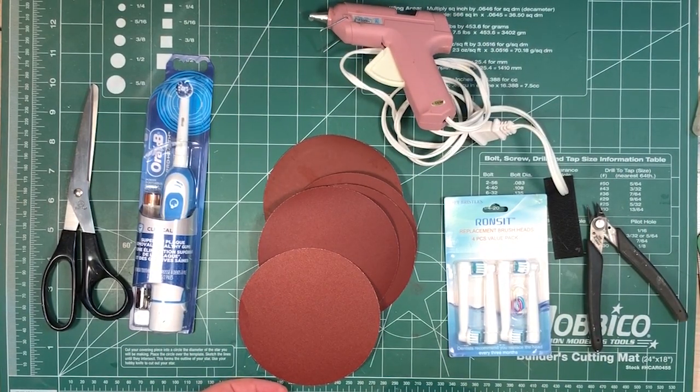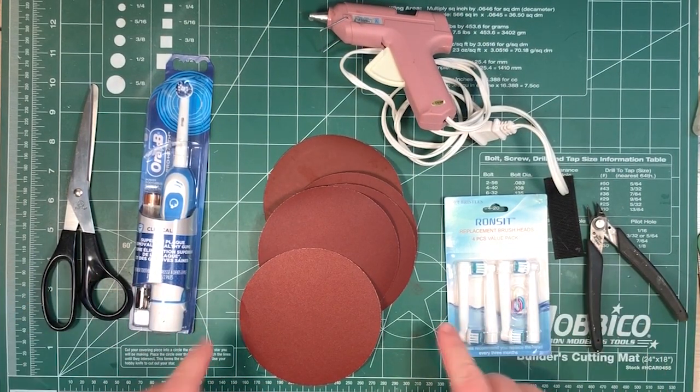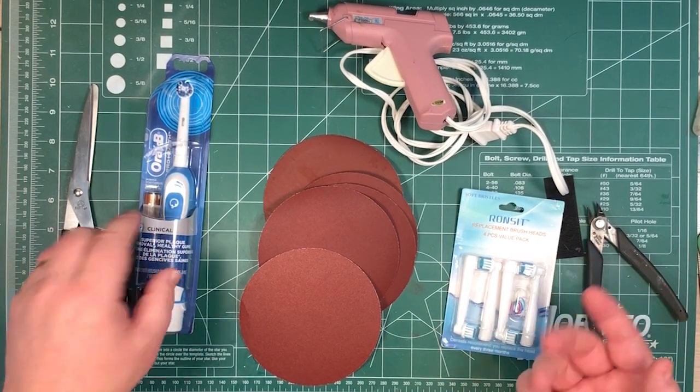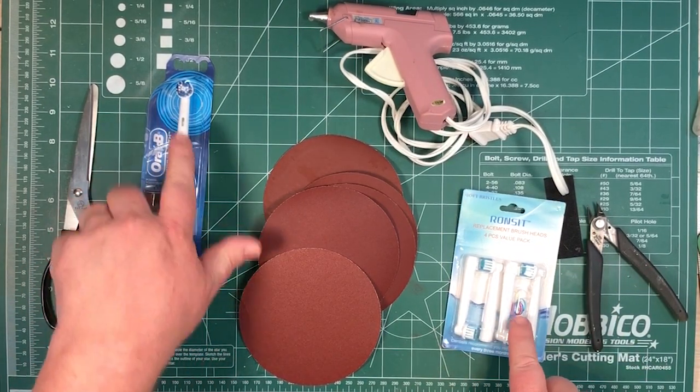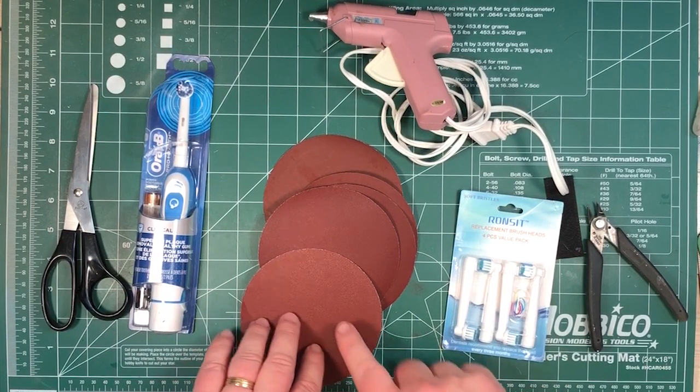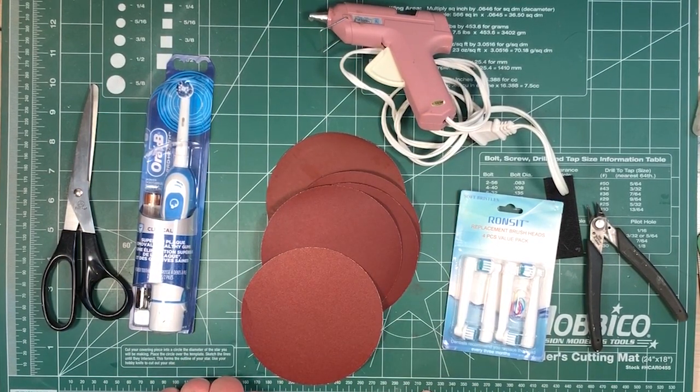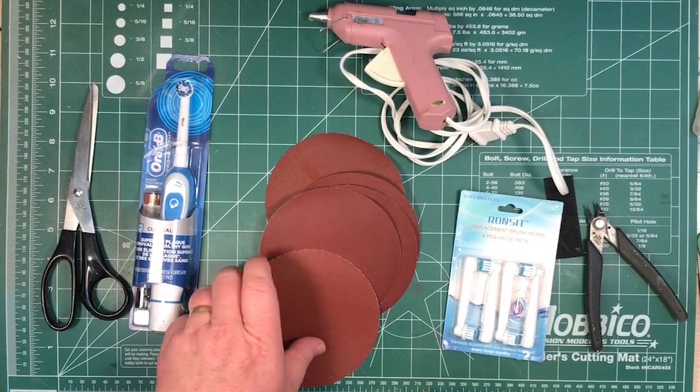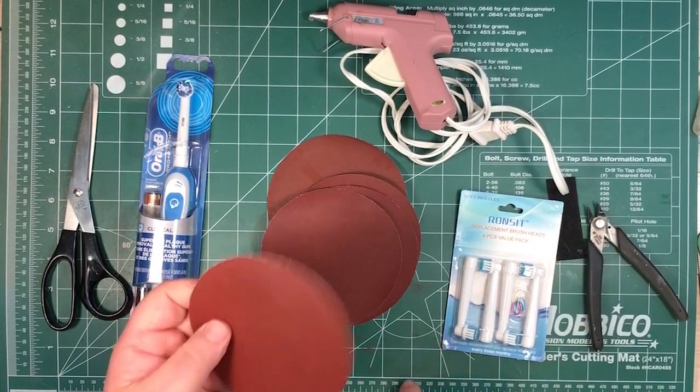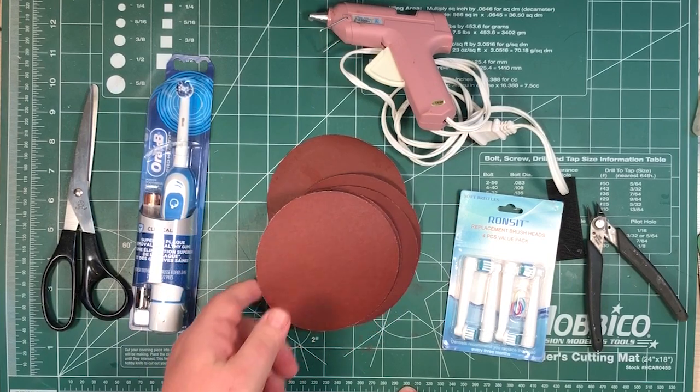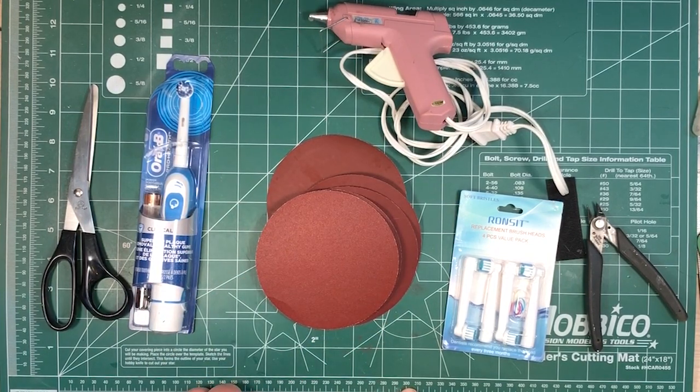I'll just undo these. Basically what I'm going to end up with is five different heads, each with one of the five different grits on it, and then I can interchange them. And I can also easily, because I'm using velcro, I can replace the grit when it wears out. So I'll open the boxes up.